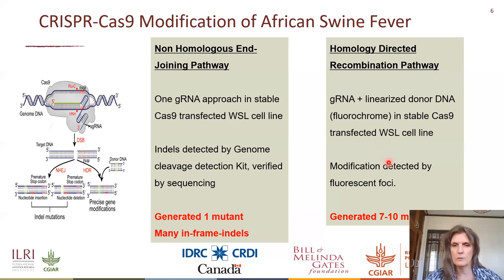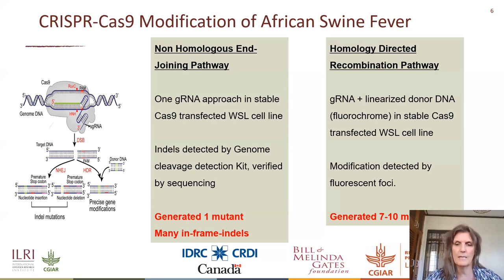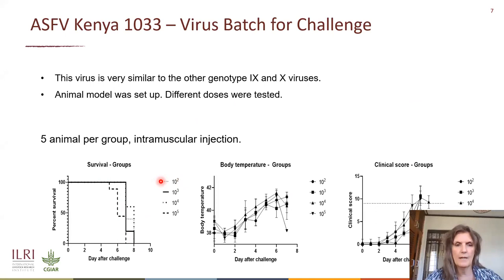So we swapped to the other method, where we have now generated seven to ten different mutants, with some still in the process of being cloned, so they are ready for animal studies. For this, we made a batch of the wild-type virus and tested different doses: 10²,10³, 10⁴, and 10⁵. Basically all animals went down by day eight. In the highest dose they went down slightly earlier than in the smallest dose. So we picked 10² as the challenge dose.